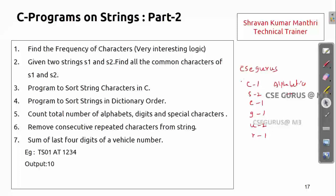One approach is to compare the first character with the second, the first with the third, and so on, keeping a count. But the problem is you can get repetition in the count. For example, if you have 'a a b' where 'a' is repeated, you might get errors in counting. That can be rectified, but there's a more interesting way to handle characters and alphabets, which we'll see now with execution.